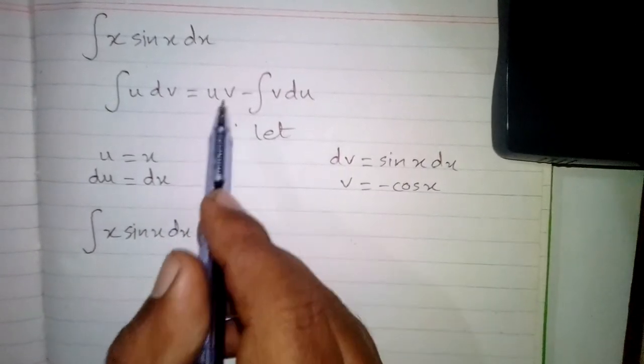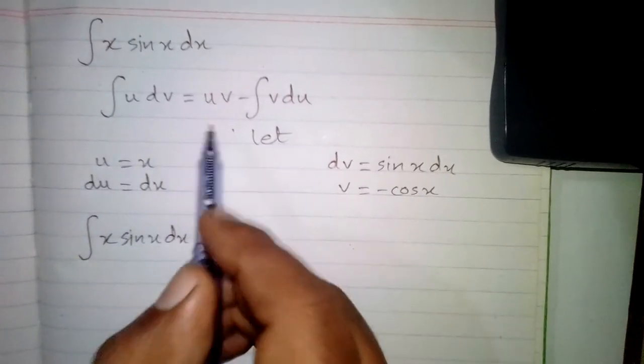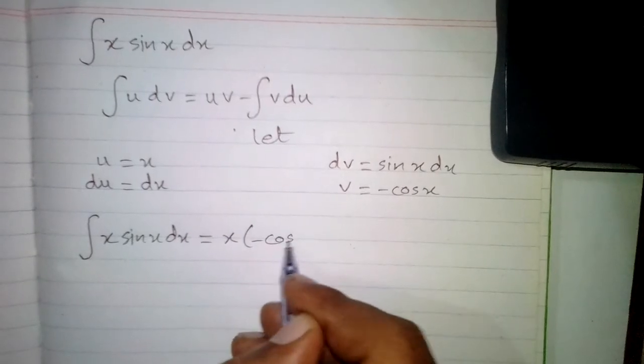And then uv. So we will write x in place of u and in place of v we will write minus cos x.